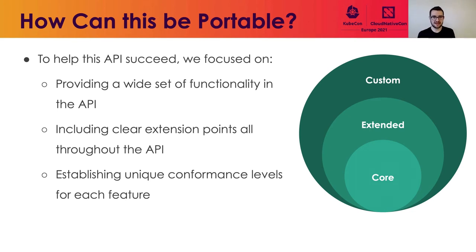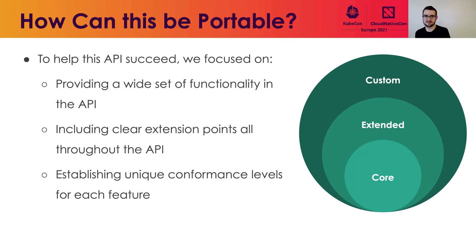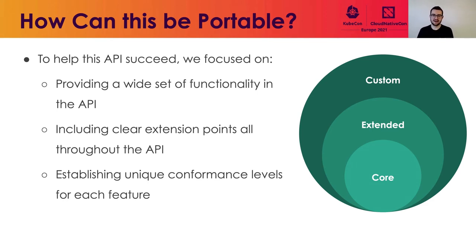We want to establish three unique conformance levels: core, extended, and custom support levels. Instead of an all-or-nothing approach where you're either conformant with the API or you're not, we have core features that every implementation must be fully conformant with. We also have extended features which we recognize not everyone will be able to support, but those that do must follow a specific set of patterns. And finally, we make room for custom conformance — implementation-specific features. This allows us to have a broad surface of what can be configured while ensuring a large chunk of the API is truly portable.